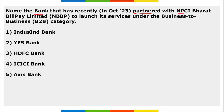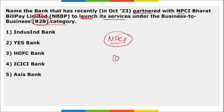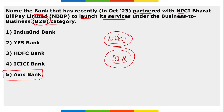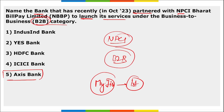Axis Bank recently partnered with NPCI Bharat BillPay Limited to launch its services under the B2B — business to business — category. Apart from this, MyJio became the first app to go live with B2B category payments.